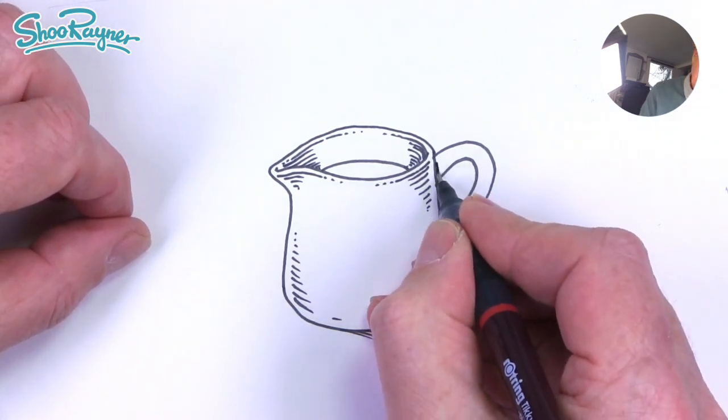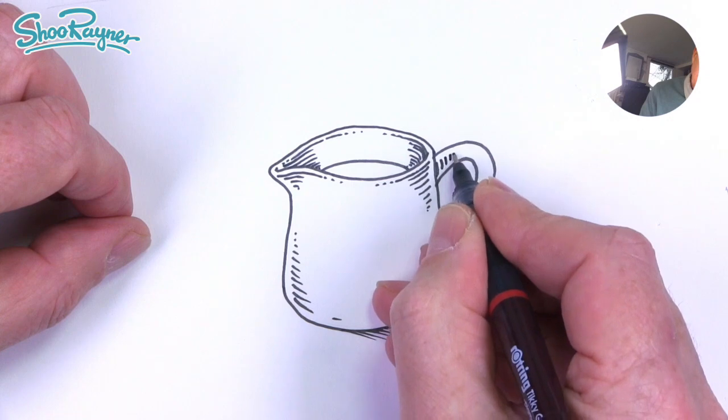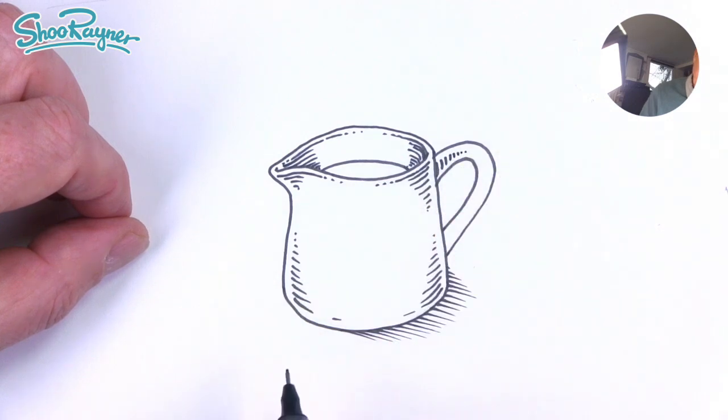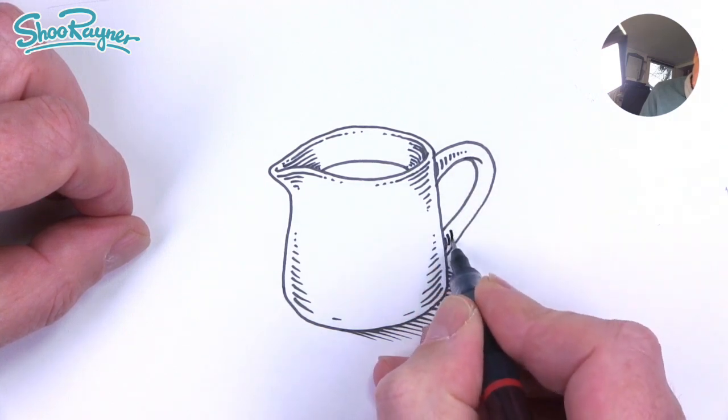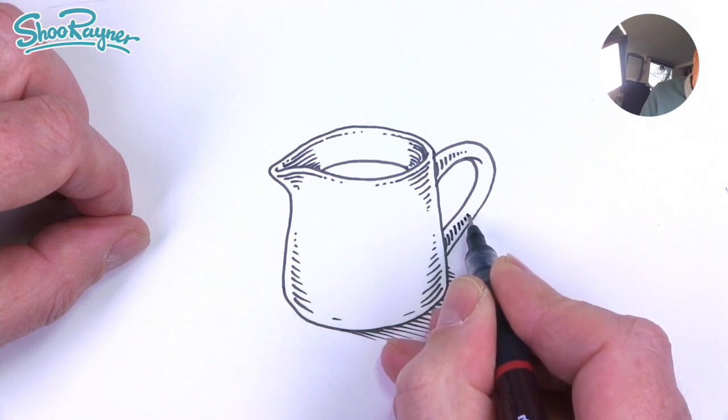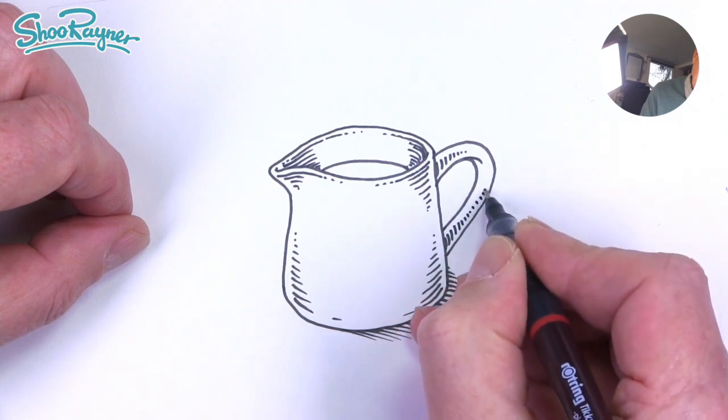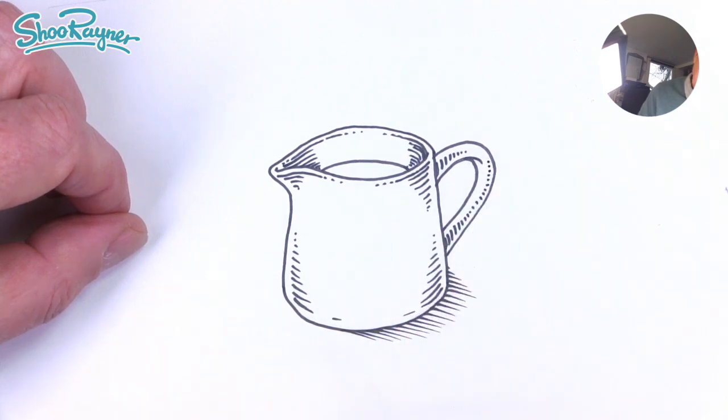And for the handle, we're going to go like that. Just let it fade away there and we're going to bring that curve around there. And here we want these to be quite thick and these are going to get thinner as it comes up to the edge like that.